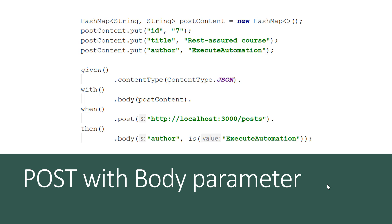As you can see, we have seen this slide in part 4 and we discussed that we will be discussing the body parameter in much greater detail in this video. For the body object for the POST content, I have created a HashMap with a String of String and passed the ID, title, and author in the POST content. Then I'm trying to verify if the body has an author of 'exit automation', since it is going to be creating a new post within our fake JSON server.